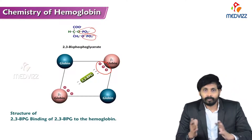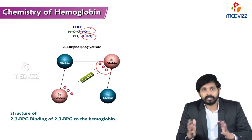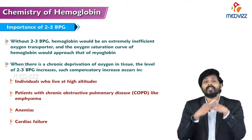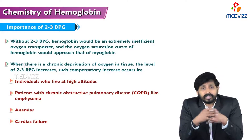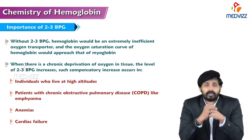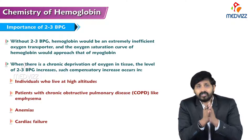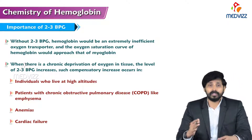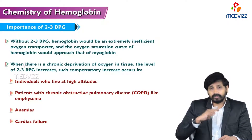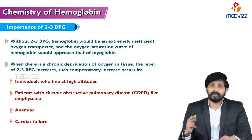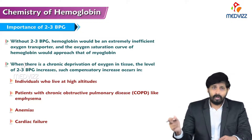Without 2,3-BPG, hemoglobin would be an extremely inefficient oxygen transporter, because the oxygen saturation curve would approach that of myoglobin. Because of 2,3-BPG, the shape of hemoglobin's curve is sigmoidal, whereas myoglobin's curve is hyperbolic due to the absence of cooperative binding.